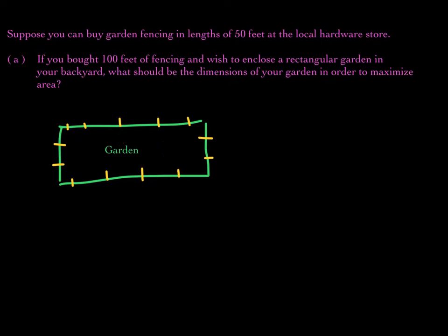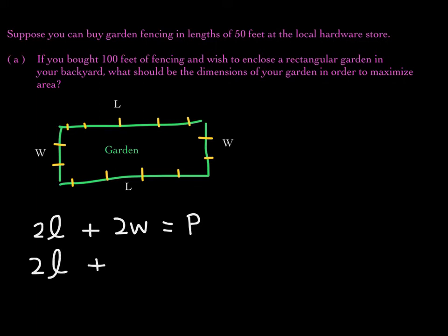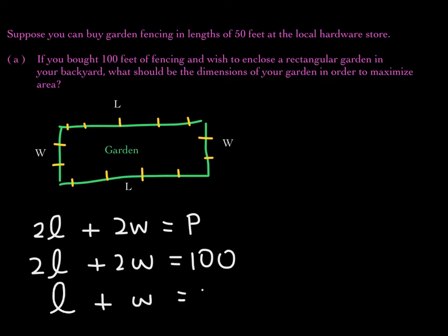Remember that this is the width and this is the width; this is the length and this is the length. We know that twice the length plus twice the width should equal the perimeter. So in this case, 2L plus 2W equals 100, because we are using 100 feet of fencing. If you divide this equation by 2, you get the simpler equation: length plus width equals 50.